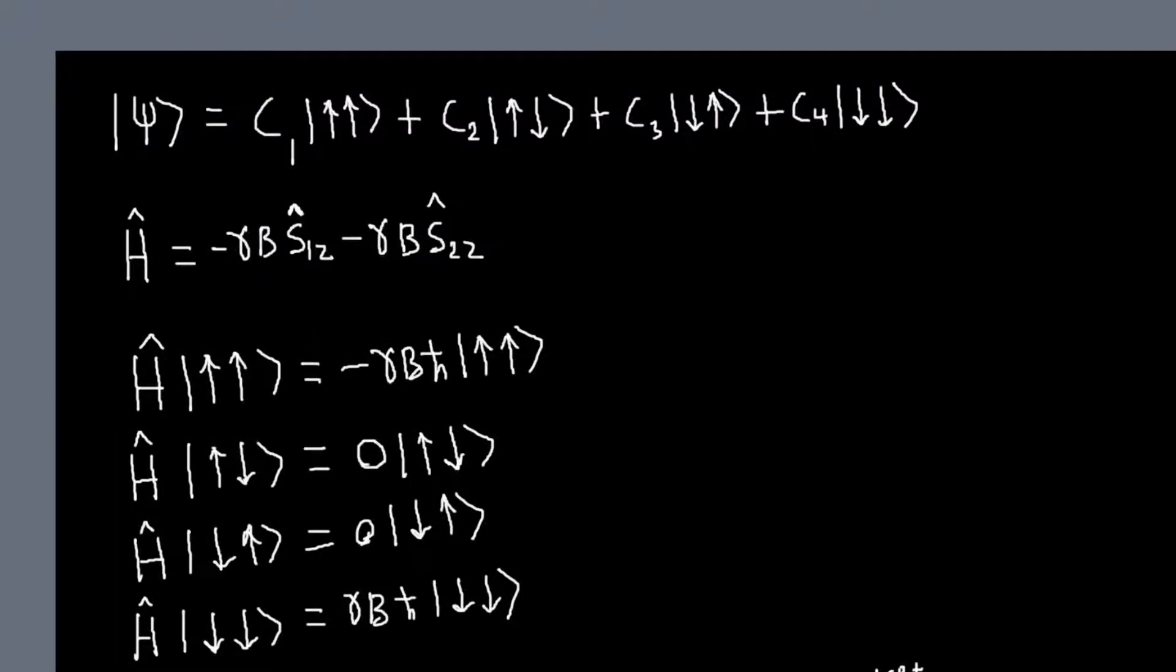So, for example, if I act this Hamiltonian on this state, it just acts on the first arrow, so I get an h-bar over 2. This one acts on the second arrow, I get another h-bar over 2, so they subtract, so I get a total of minus gamma b h-bar. So it's an eigenstate.